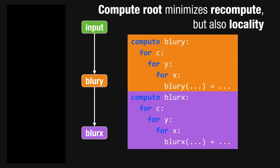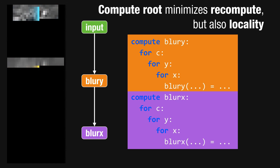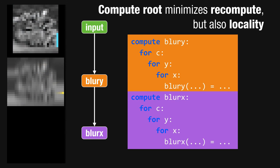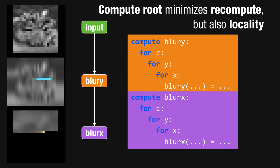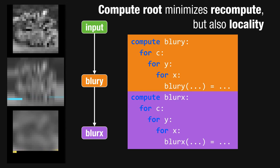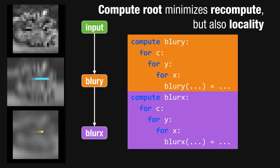At the other extreme, compute_root pulls the computation of blur_y entirely outside the computation of blur_x. In this case we get a complete loop nest to compute all of blur_y before computing any of blur_x. It computes everything we're ever going to need in blur_y before computing any of blur_x. By the time we get around to computing anything in blur_x, we're only reading the values in blur_y since they're already computed ahead of time. But by the time we do read any of these values, we've computed an entire image of other values in between. So these intermediate values from blur_y will have been kicked out of any cache, written all the way back to main memory, from which we'll have to slowly read them all back in.